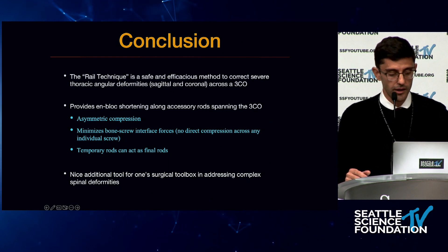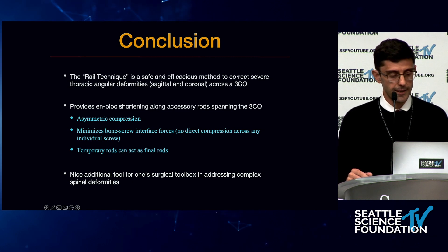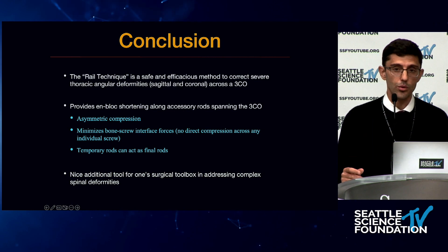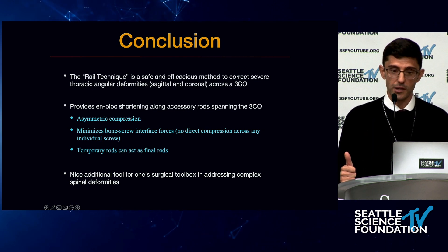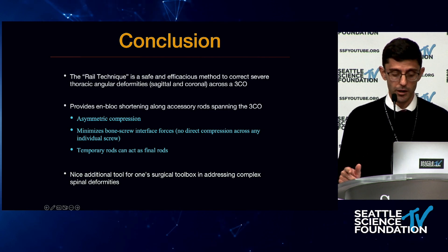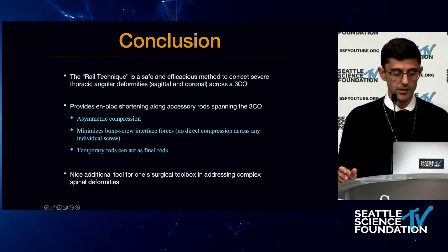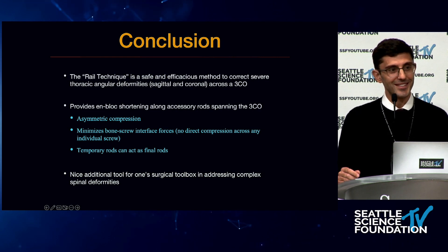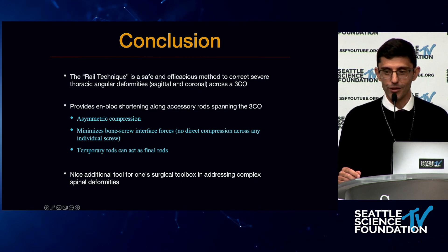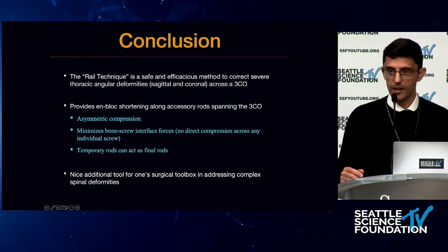In conclusion, the rail technique is a safe and efficacious method to correct severe thoracic angular deformities in both the sagittal and coronal planes across the three-column osteotomy. It provides unblocked shortening along the accessory rods, allows asymmetric compression, minimizes bone-screw interface forces with no direct compression across individual screws, and temporary rods can act as final rods. I don't want this to be your only technique — I just hope it will be added to your toolbox.